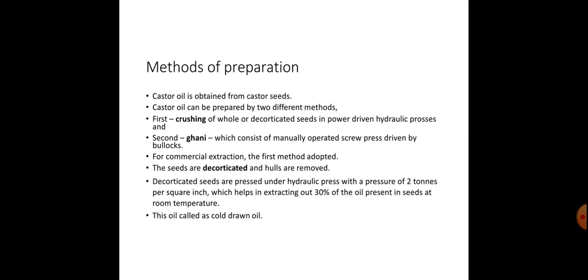Method of preparation. Castor oil is obtained from castor seeds and can be prepared by two methods. First, crushing of whole or decorticated seeds in a power-driven hydraulic process. Second, ghani, which consists of a manually operated screw press driven by bullock. For commercial extraction, the first method is adopted. The seeds are decorticated and hulls are removed. Decorticated seeds are pressed under hydraulic press with pressure of 2 tons per square inch, extracting about 30% of the oil present in the seed at room temperature. This oil is called cold-drawn oil.